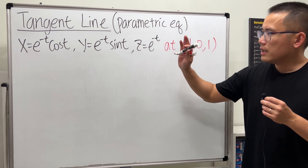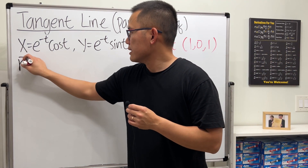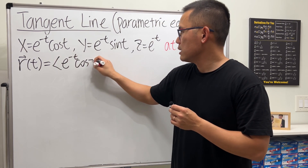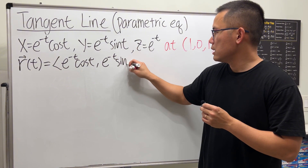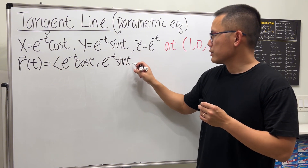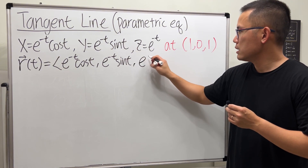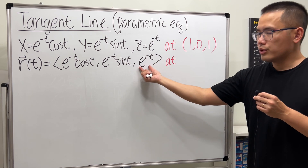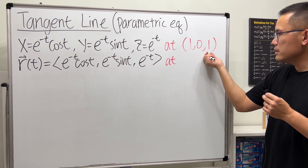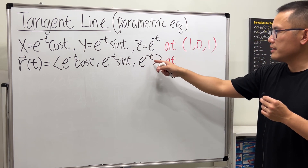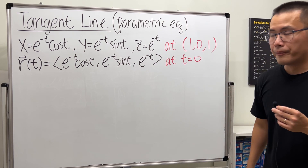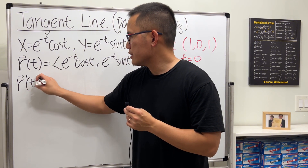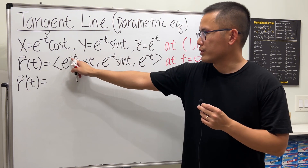Alright, one more example. Let's write this as R of T with the X component, Y component, and also the Z component. We have to figure out the T value. Looking at the Z component, T has to be 0 — e to the negative 0 is 1. So T equals 0. The hard part here is the derivative; make sure you use both the product rule and the chain rule.